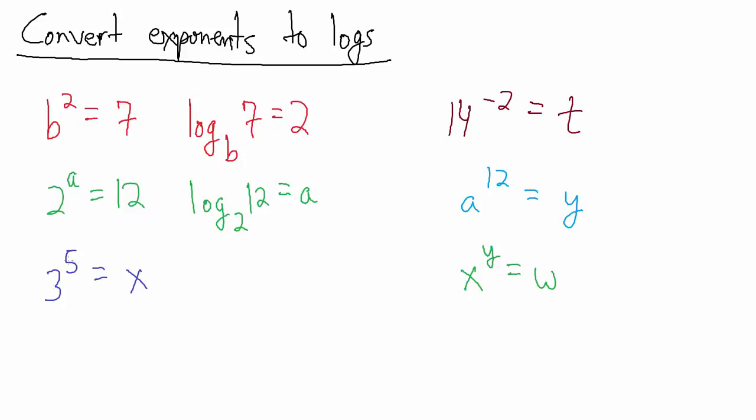Alright, now how about here, we have 3 to the 5th equals x. So base is 3, exponent is 5, number over here is x. So then what we say is the base 3 logarithm of x equals 5, because 3 to the 5th power equals x.